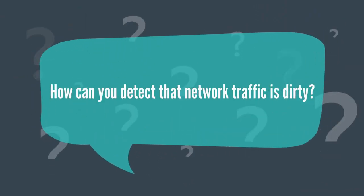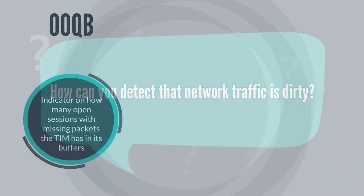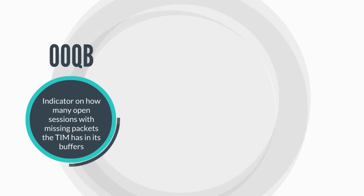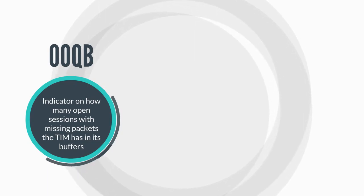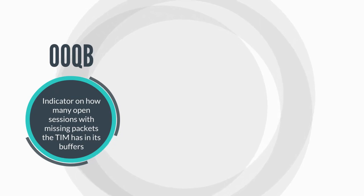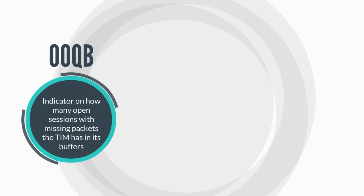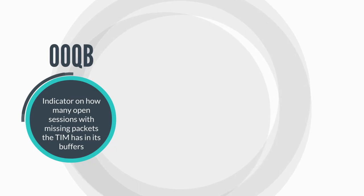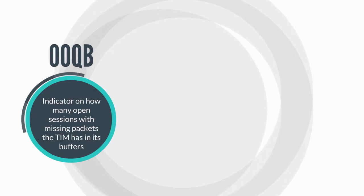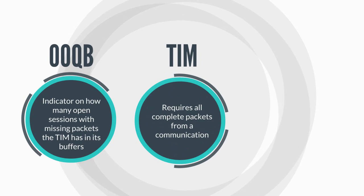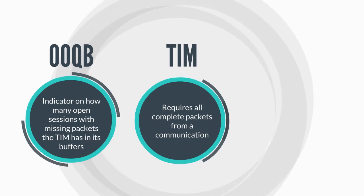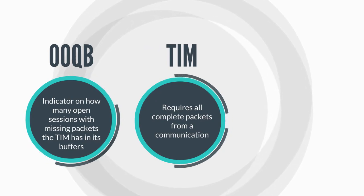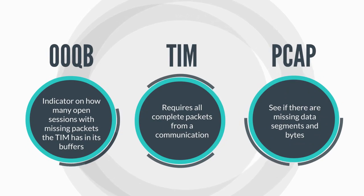How can you detect that network traffic is dirty? OOQB is an indicator of how many open sessions with missing packets the TIM has in its buffers. Note that the TIM is unable to tell if a packet is only out-of-order, or if it was lost due to port oversubscription, a microburst, or really lost. If the out-of-order buffer queue is getting too large, the TIM will spend more time trying to fix the traffic than to actually analyze it. The session will be buffered in the OOQB until the missing packets are hopefully delivered by the SPAN provider. Using a PCAP, you can also see if there are missing data segments and bytes.